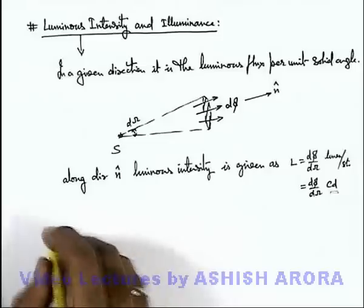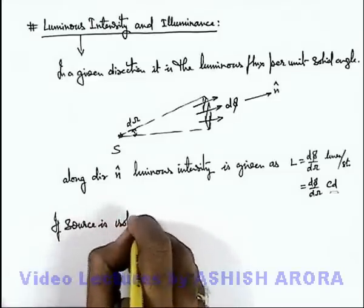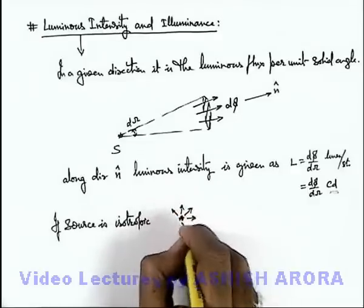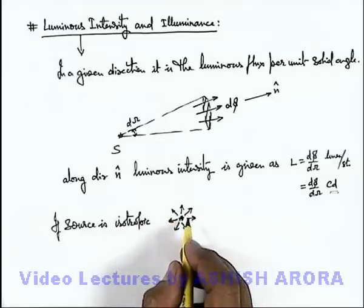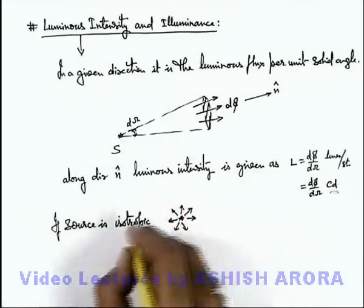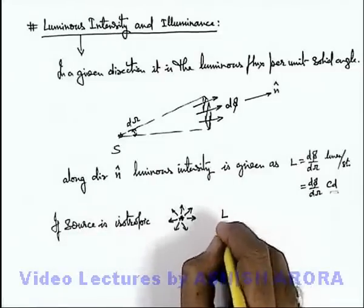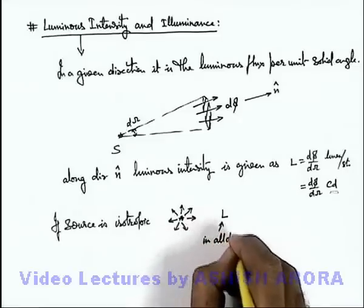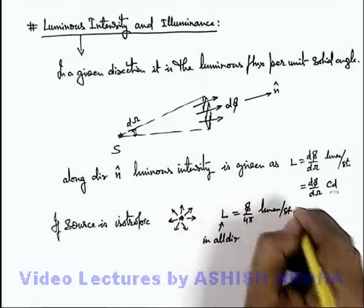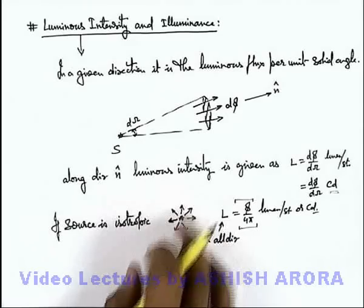In this particular situation if the source is isotropic, that means if a point source is emitting light in all directions, then we can say its total luminous flux is being spread in a solid angle 4π uniformly in all directions. So for an isotropic source, luminous intensity L, which is given in all directions, can be given as φ upon 4π lumen per steradian or candela. This is the flux per unit steradian which is emitted by the source in all directions.